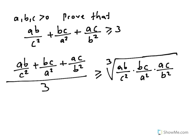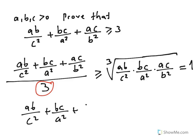The numerator of the product is A²B²C² and the denominator is also A²B²C², so the cube root equals 1. Taking the 3 to the other side gives the desired result: AB/C² + BC/A² + AC/B² ≥ 3.